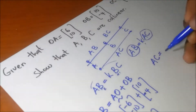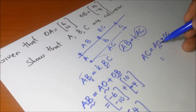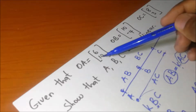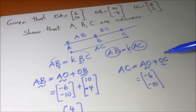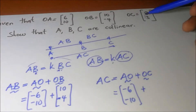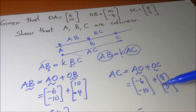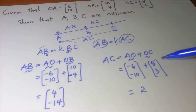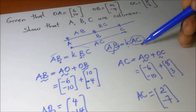Now let's find AC. AC = AO + OC. AO is (-6, -10) as before. OC is (8, 3). Adding: -6+8 = 2 and -10+3 = -7. So vector AC is (2, -7). We now have both AB = (4, -14) and AC = (2, -7).